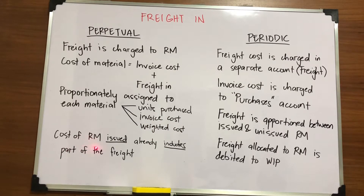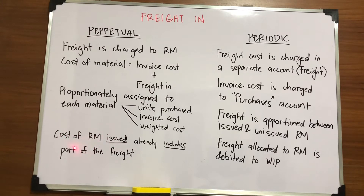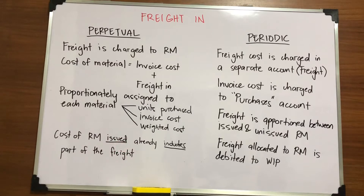The cost of raw materials issued already includes the part of the freight. This refers to the transfer from raw materials to the conversion process — when you transport your raw material inventory to work-in-process, it already includes a part of the freight.